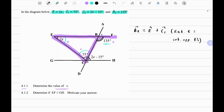So now we can substitute: B2 is 135 degrees equals E which is 2x plus C1 is 75 degrees. Taking C1 to the other side we have 2x equals 135 degrees minus 75 degrees. So 2x equals 60 degrees. Divide both sides by 2. Therefore x should be equals to 30 degrees.